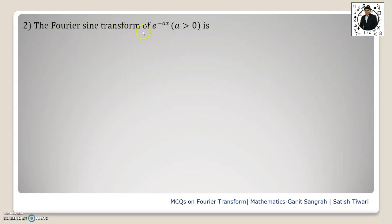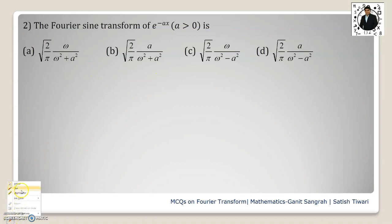Example number 2 is the Fourier sine transform of e to the power minus ax, where a is greater than 0. The four options are with you. So you should know the formula for the Fourier sine transform. The formula for the Fourier sine integral is given by F̄ₛ(s) equals under root of 2/π integral 0 to infinity f(x)sin(ωx) dx.